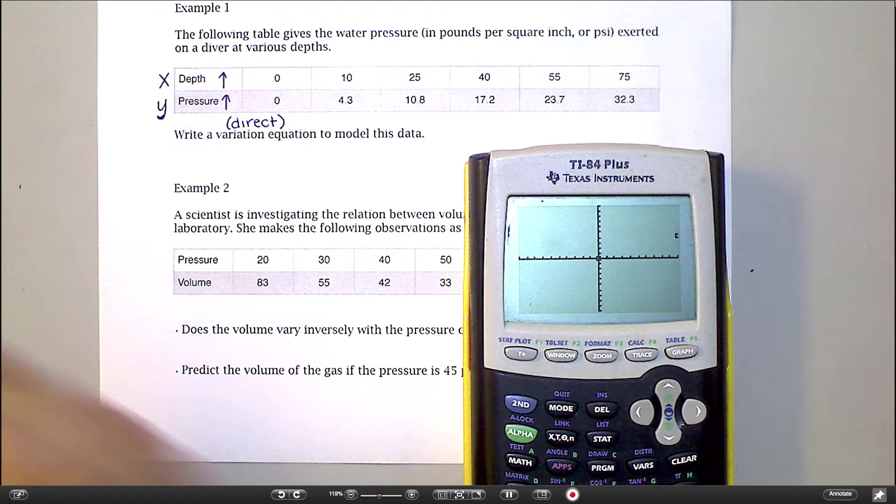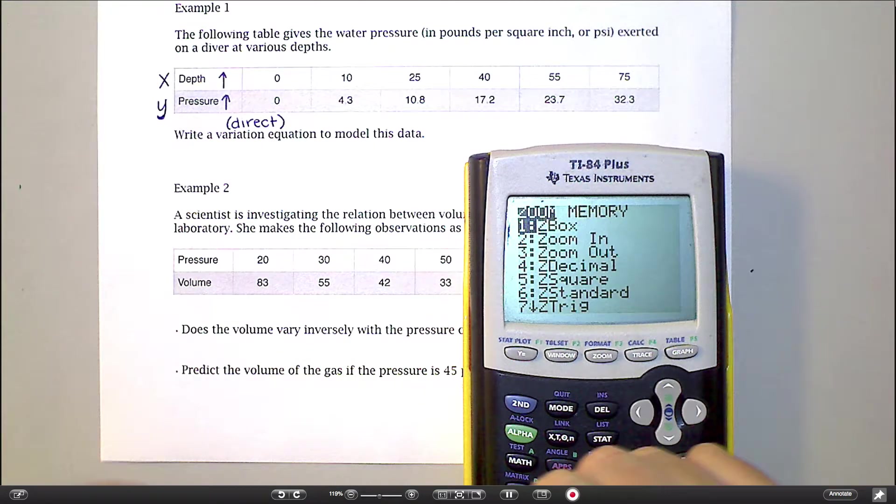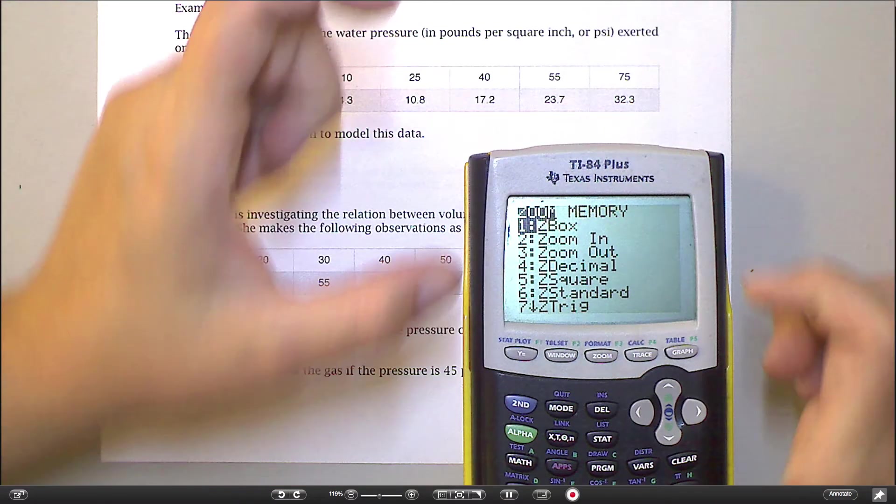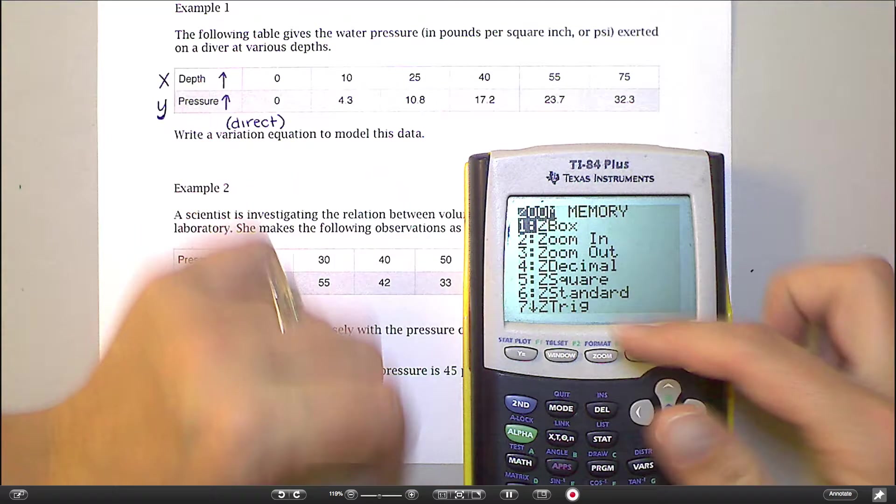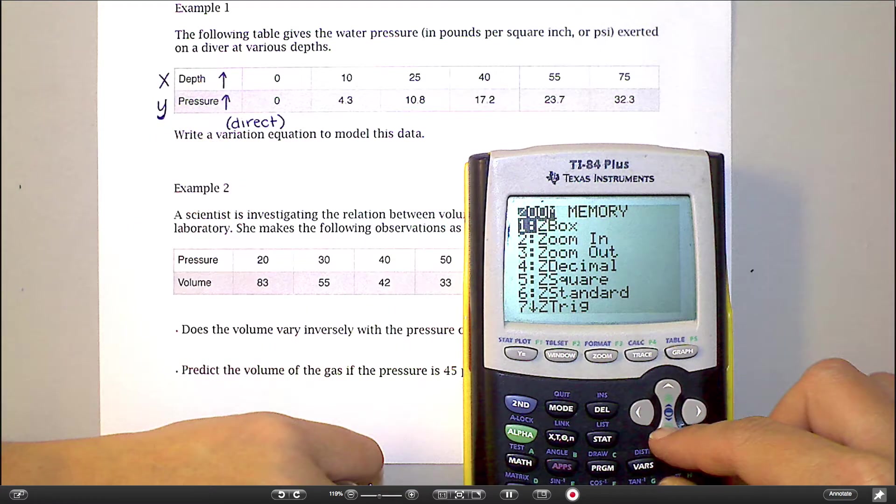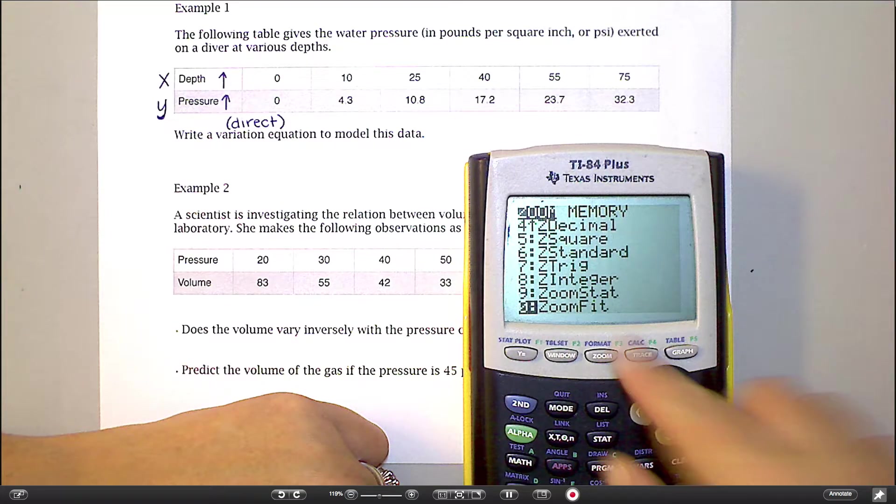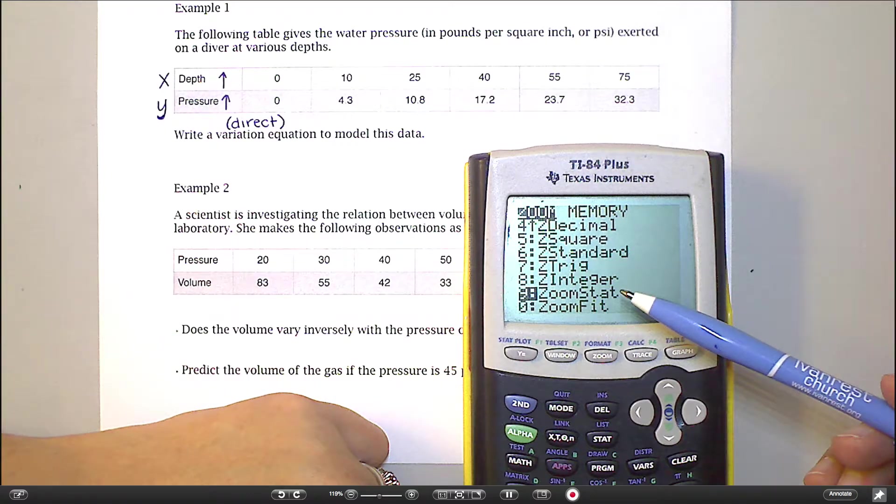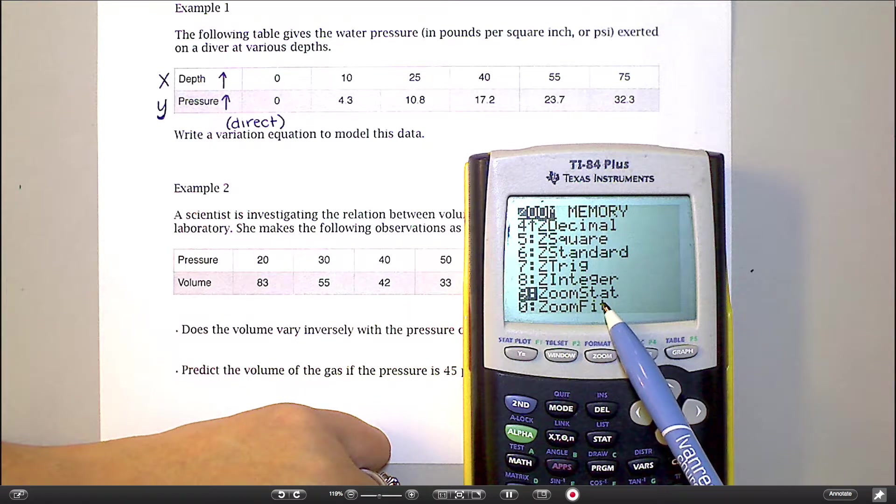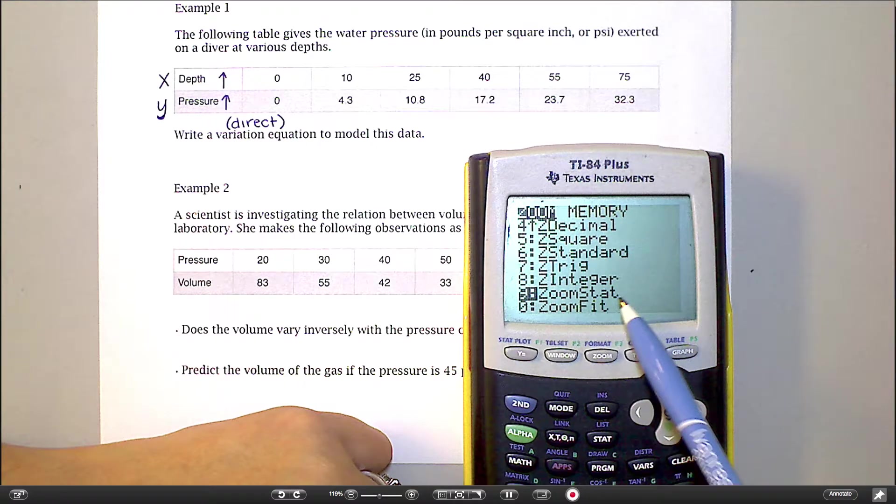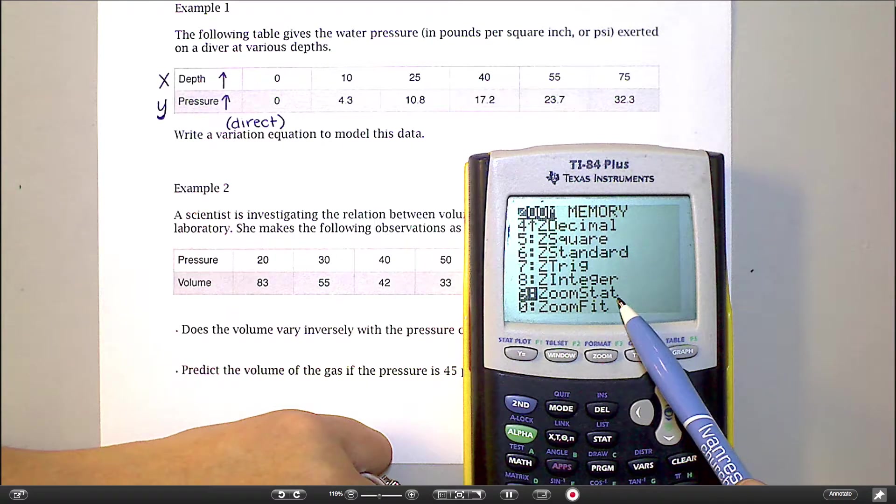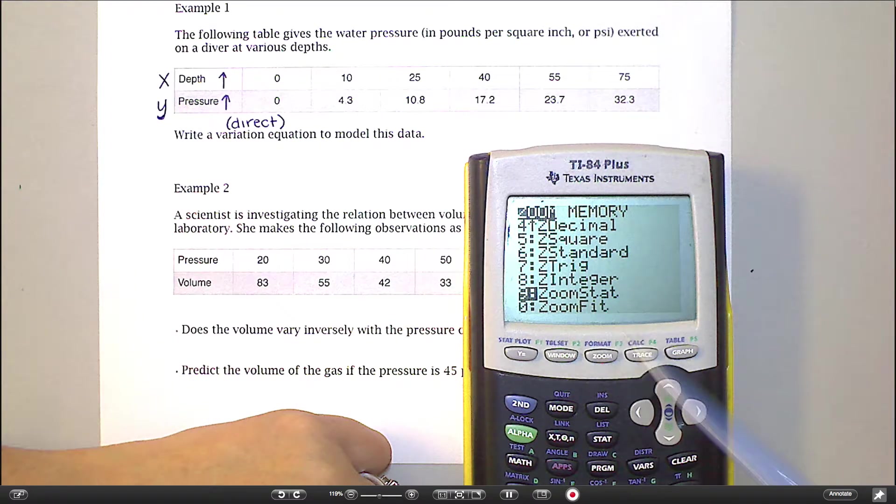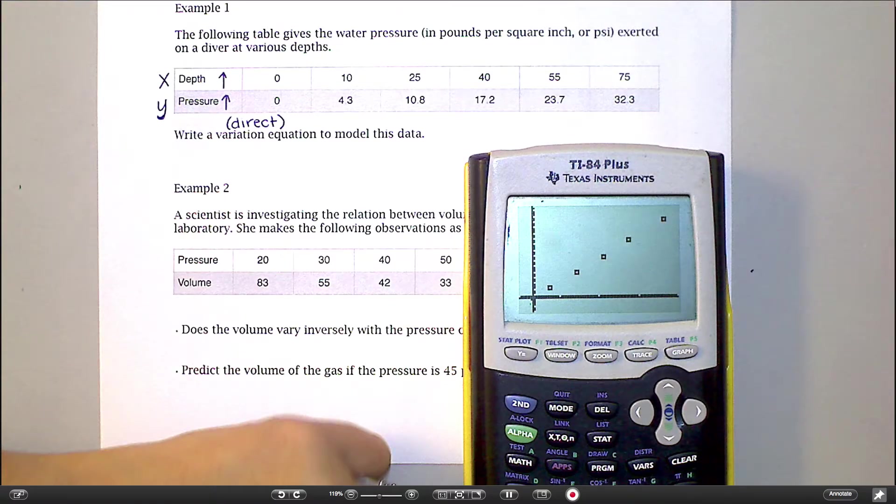So what you can do on your calculator is if you hit zoom, this is your way of telling your calculator, what do you want your calculator to adjust the screen to look at? And there's all these different things. We're going to use some of them this year, but the one you want to look for right now, I think is option nine. And it's probably option nine on just about everybody's calculator, zoom stat. So you're looking for zoom stat and that will always adjust your window to fit anything that you put in here, the stat plots, under the lists. So I'm going to choose zoom stat and now I can see my points.